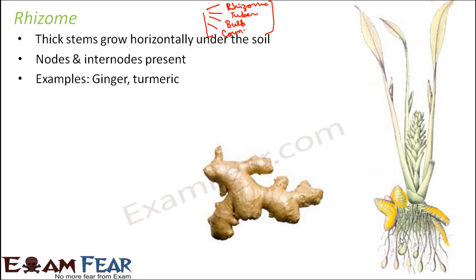We are now talking about stem modification. These stems are very thick and grow horizontally under the soil with nodes and internodes present. The adventitious roots arise from the nodes of the stem. Axillary and terminal buds are also present, and they give rise to aerial branches under favorable conditions.